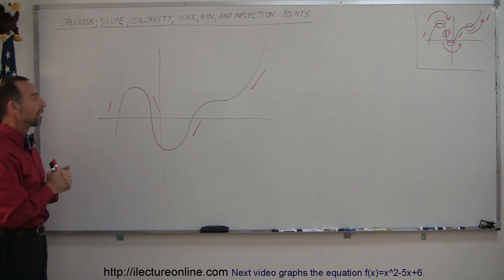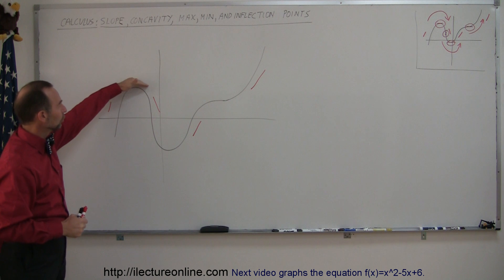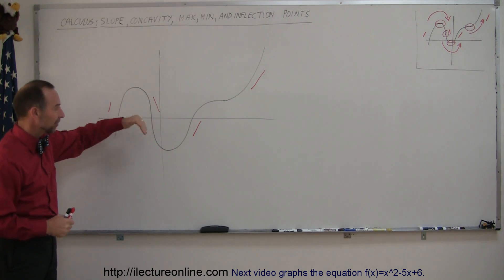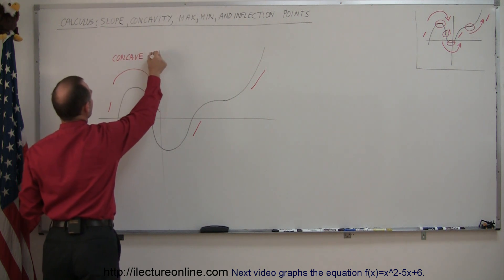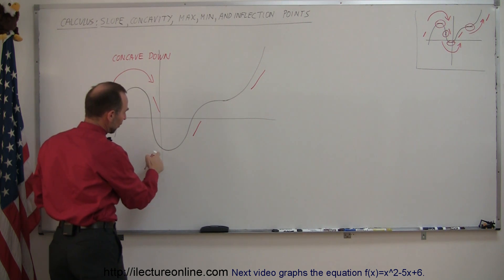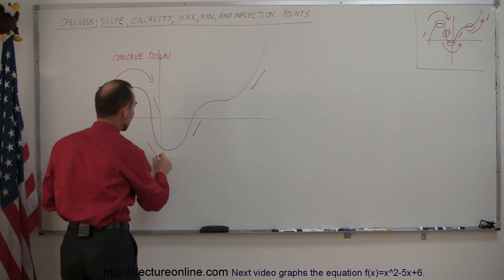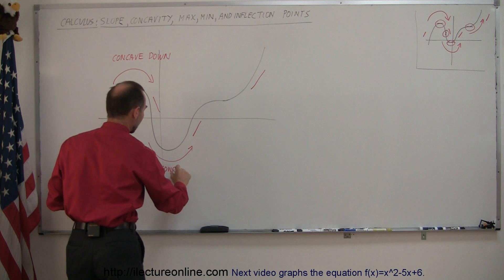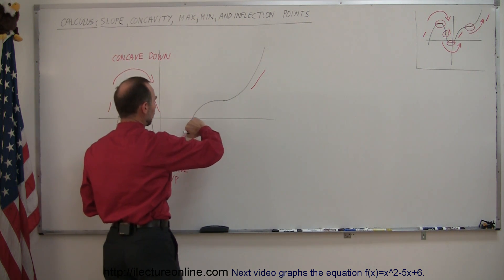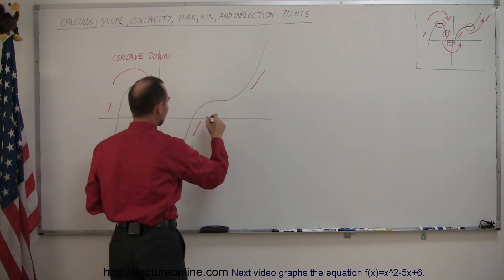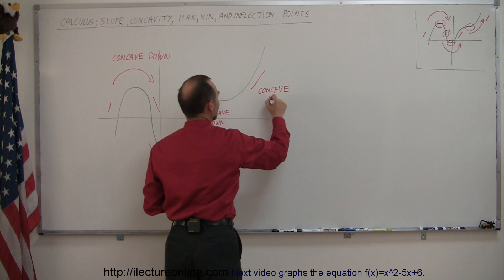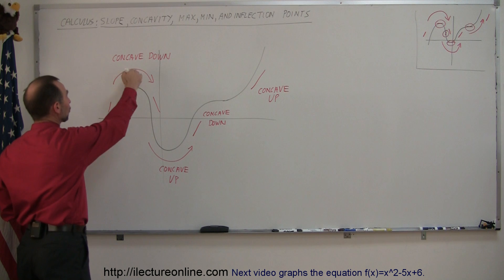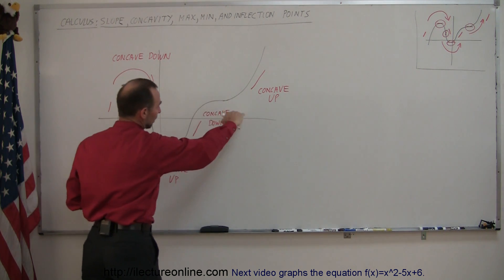Concavity is how the slope changes. From there to there, the slope goes from positive to negative — from a large slope to a small slope to a negative slope — so this is called concave down. In this region, we go from negative slope back to a positive slope, so the slope increases there, making this region concave up. Over here, the slope is changing, so this is concave down. And then over here, this part is concave up. The concavity of a curve explains how the slope is changing: is it becoming smaller? Concave down. Is it becoming bigger? Concave up.